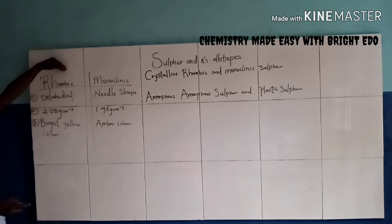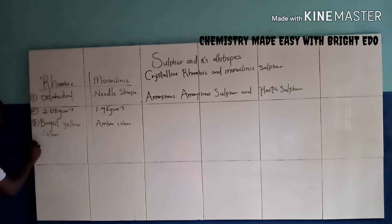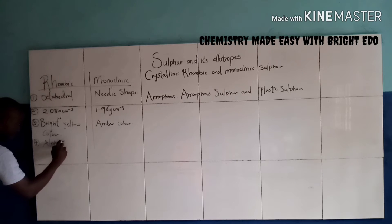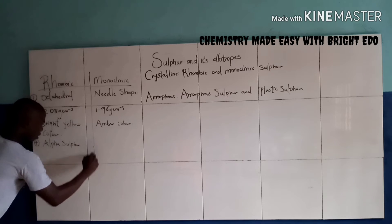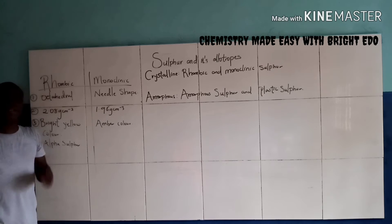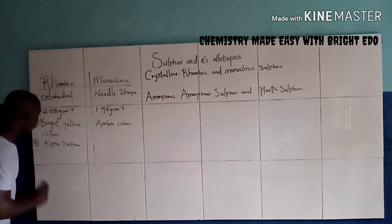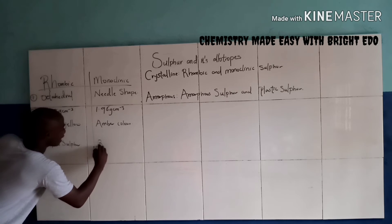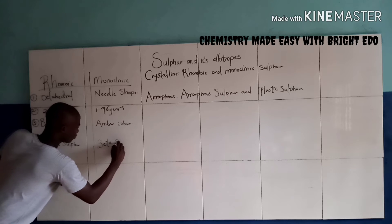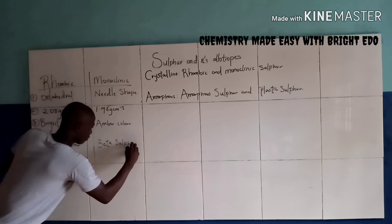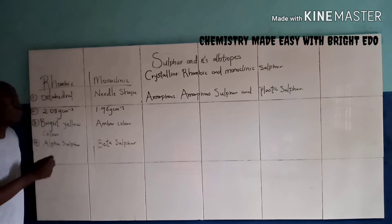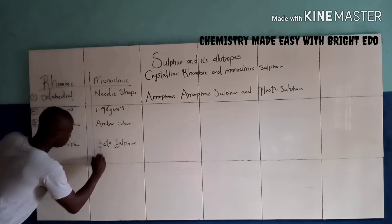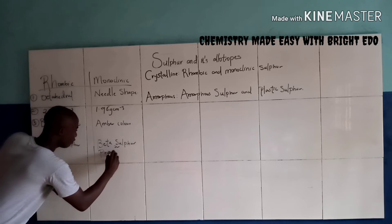Now Rhombic Sulfur is also called Alpha Sulfur. While Monoclinic Sulfur is also called Beta Sulfur. Beta Sulfur is also called Prismatic Sulfur.